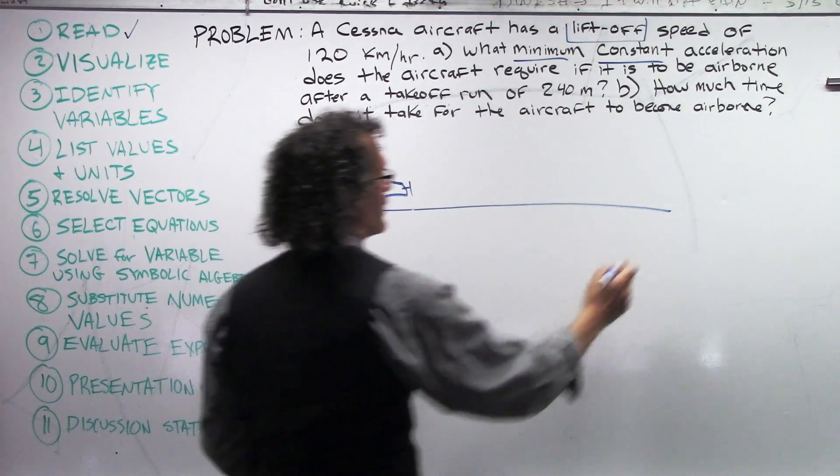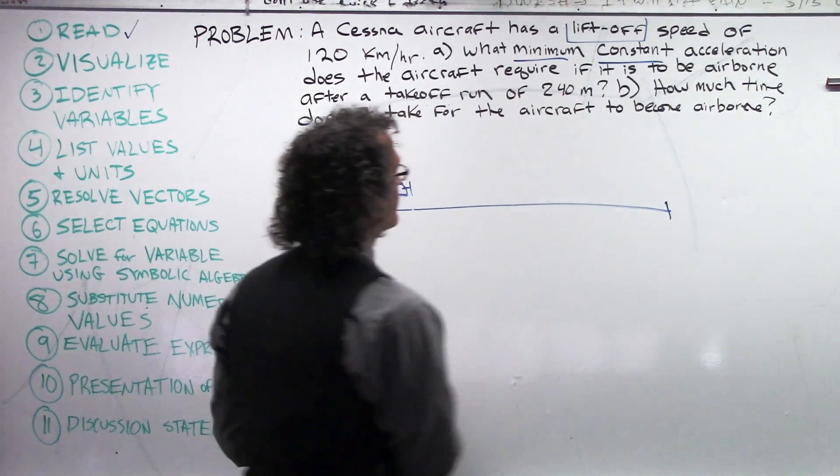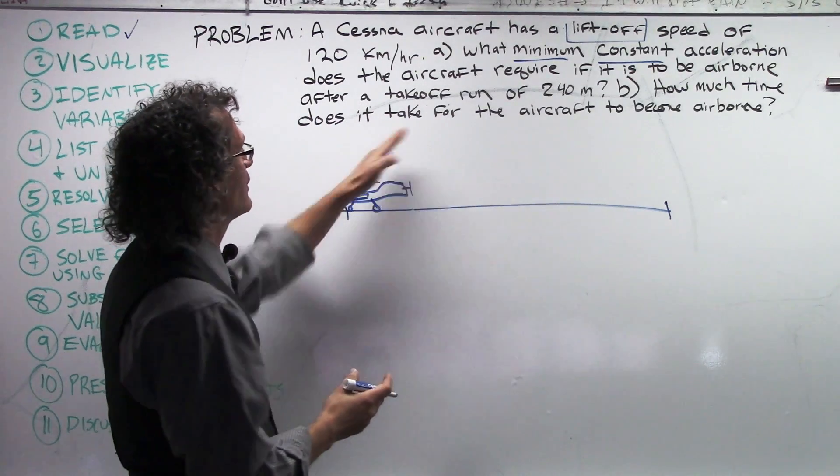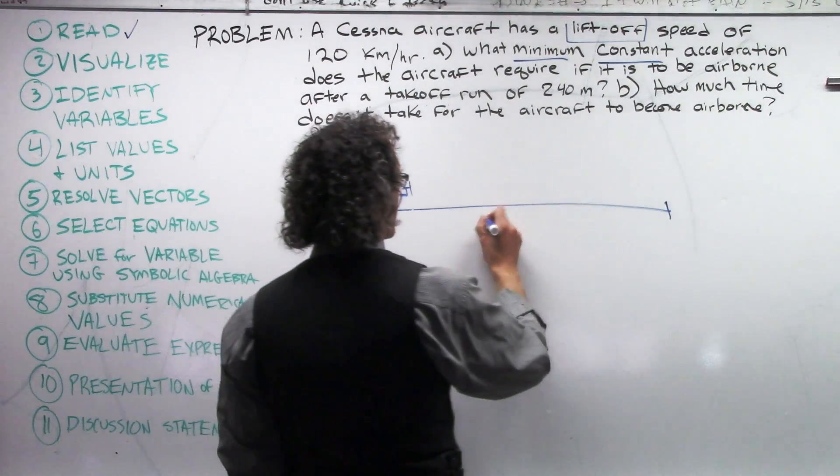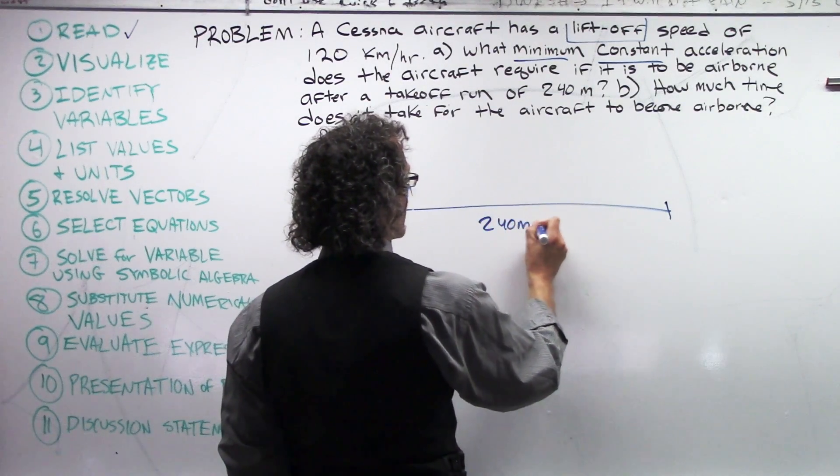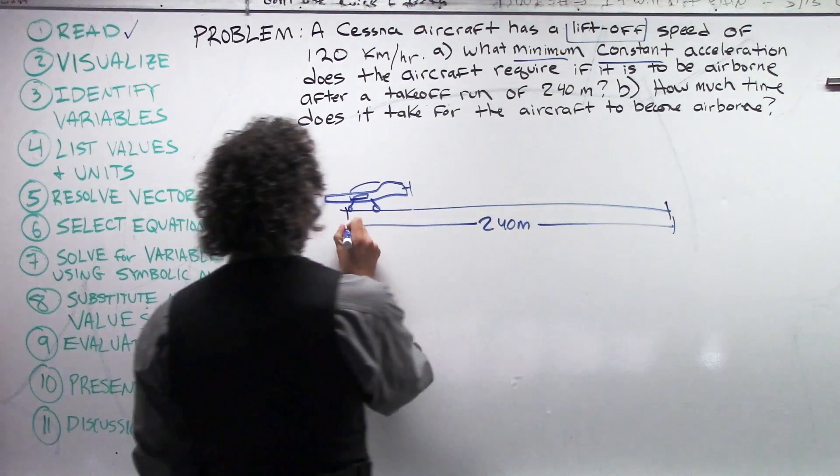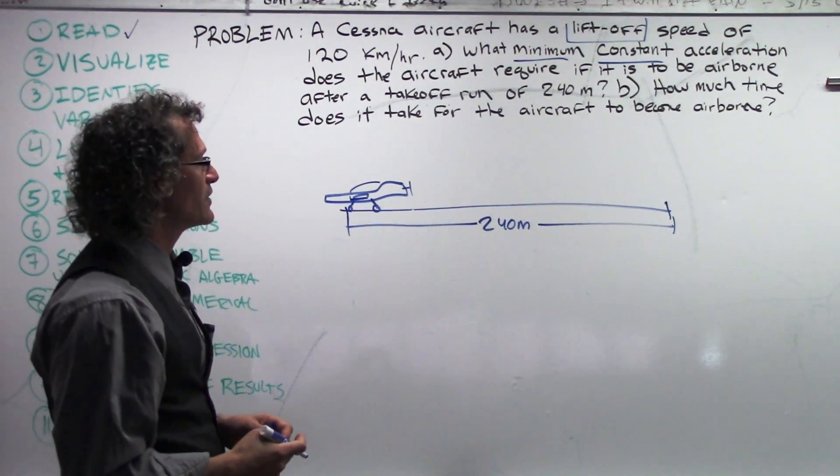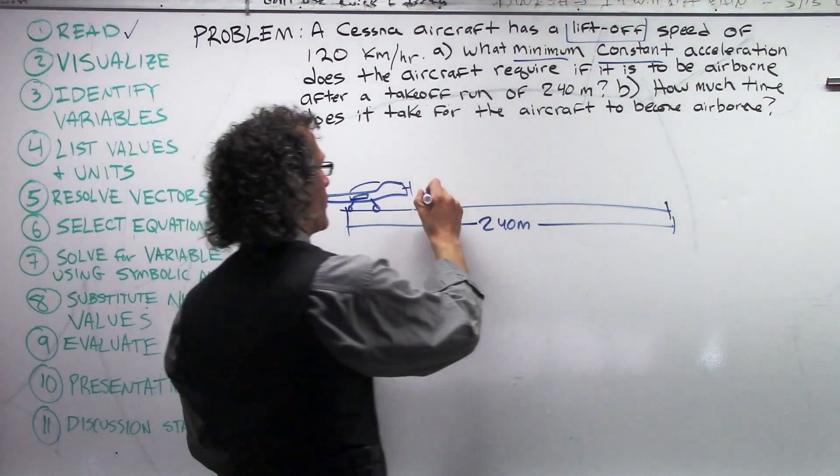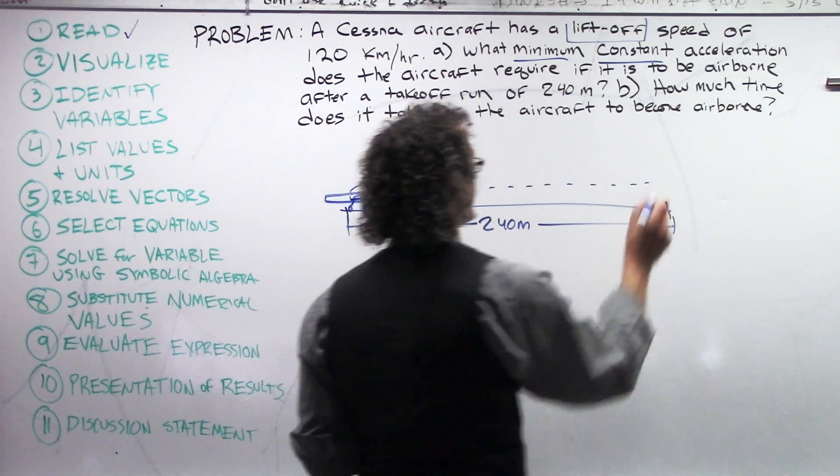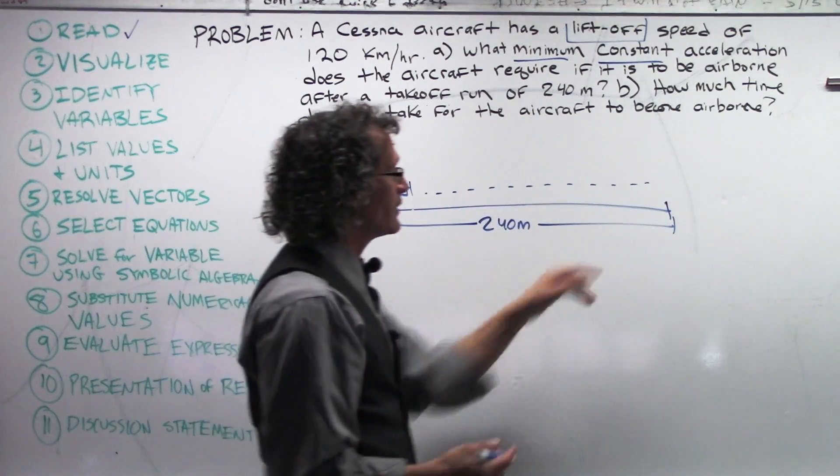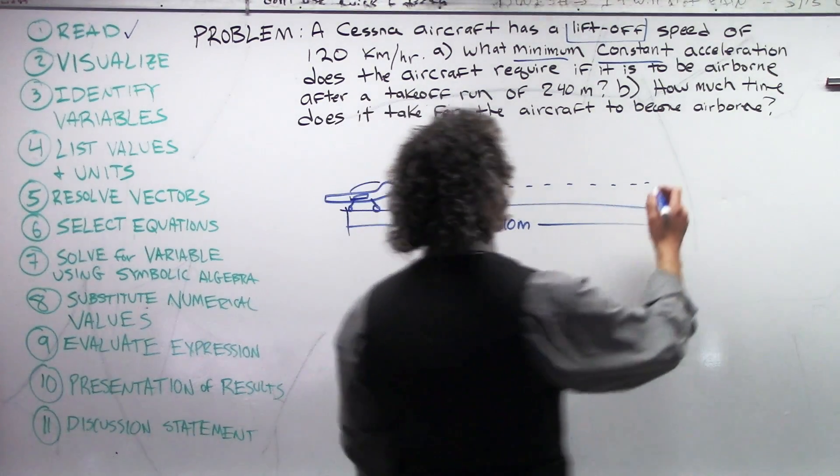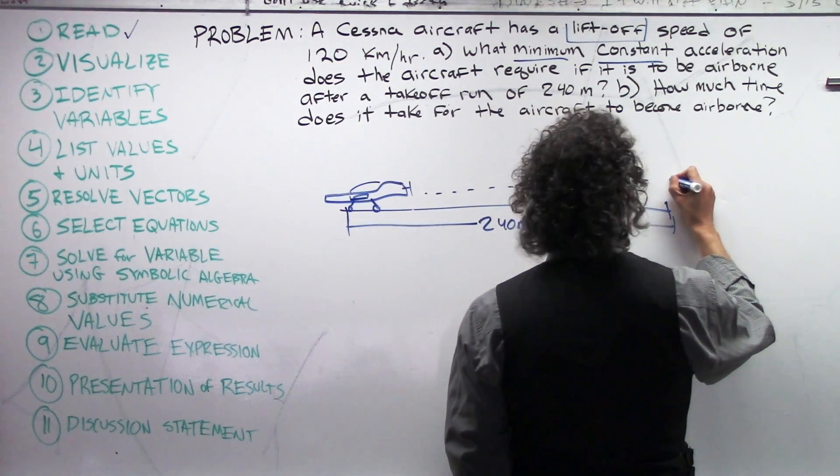So, what we know is that it's on a runway, we're actually told the length of this runway, it is 240 feet, or at least it takes, let's see, everyone, a takeoff run of 240 meters. So, yes, we do have something here that can be expressed, 240 meters is that distance.